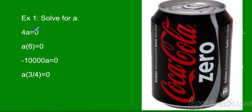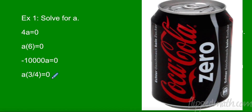So four times a equals zero. I divide by four — zero divided by four is zero, so a has to equal zero. Let's try a times six equals zero. Again, divide by six — zero divided by six is zero. Anytime we have two or more things multiplying and the product is zero, one of those two things has to be zero. That's the only way to get there.